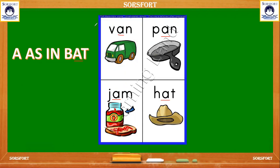We can start reading joining words. Van: V, A, N — van. Pan: P, A, N — pan. Jam: J, A, M — jam. Hat: H, A, T — hat. Like this, we can start reading the three-letter words.